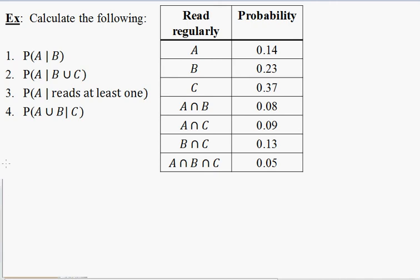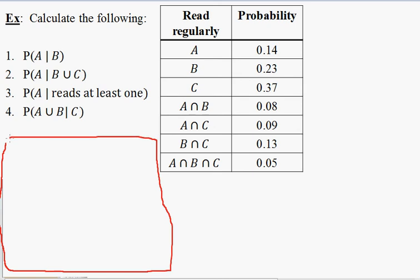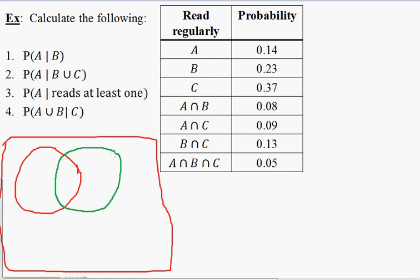Let's now take a look at this Venn diagram problem where we actually have three things happening. So let's draw our universe over here. We have event A in red, event B in green, and event C in blue. Now let's start entering the information here.